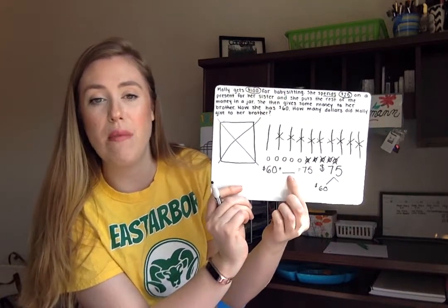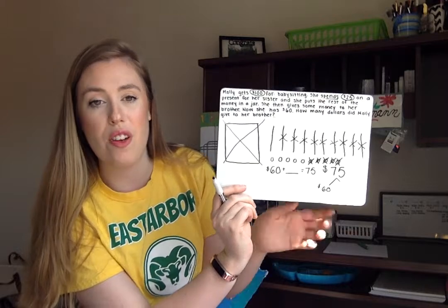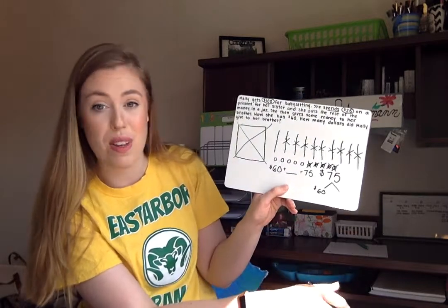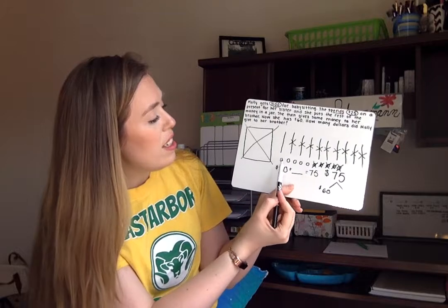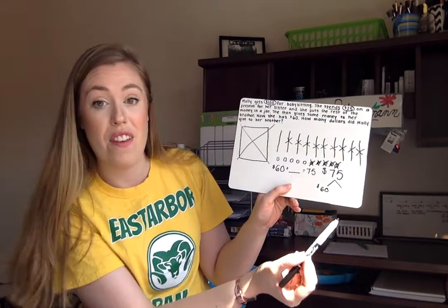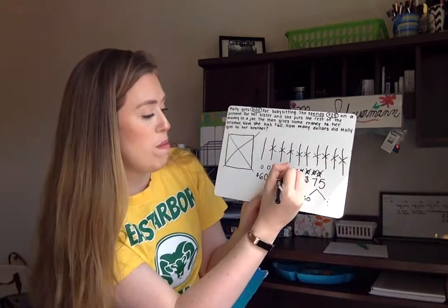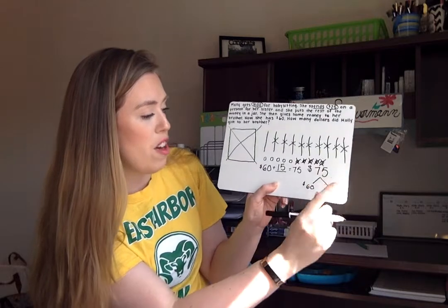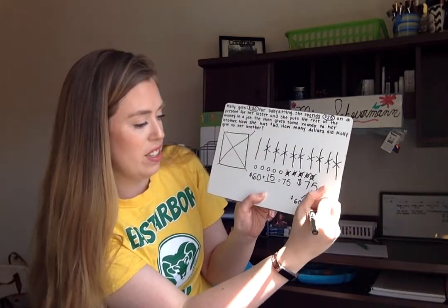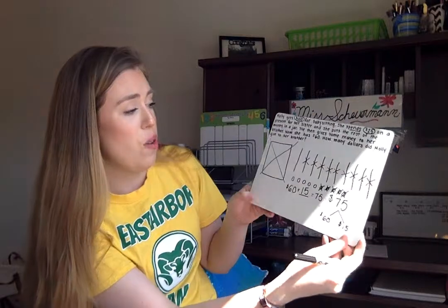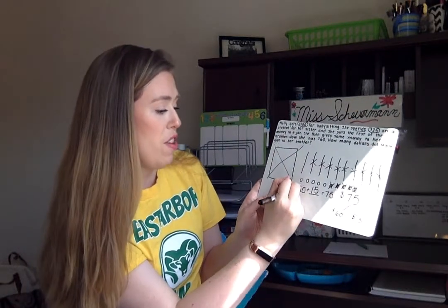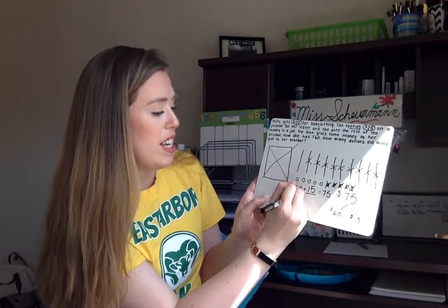There go my six groups of 10. Now we need to figure out how much she gave to her brother — what is that other missing piece? Let's count up and see what place value blocks we have left: 10, 11, 12, 13, 14, 15. So she must have given her brother $15. The answer to this problem — how many dollars did Molly give to her brother — would be $15.